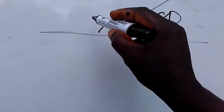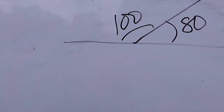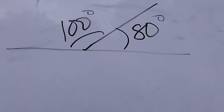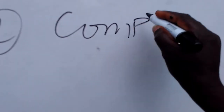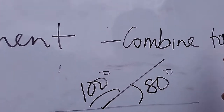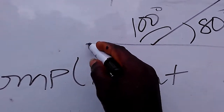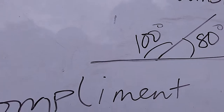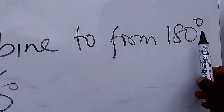Let's say this angle is 80 degrees and this one is 100 degrees. Angle 100 is a supplementary angle to form 180 degrees, and angle 80 is also a supplementary angle to form 180 degrees. These two are supplementary angles. The supplementary angles are angles that combine to form 180 degrees — there can be two angles or more than two angles. As long as they combine to form 180 degrees, they are supplementary angles. An example is 100 degrees and 80 degrees.